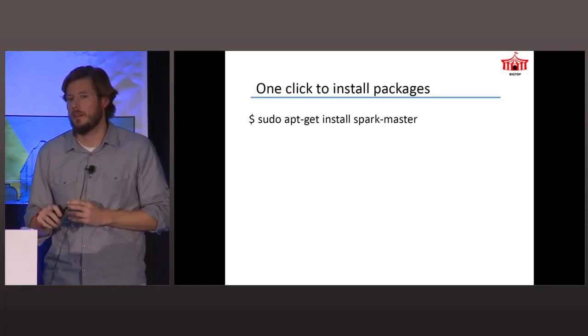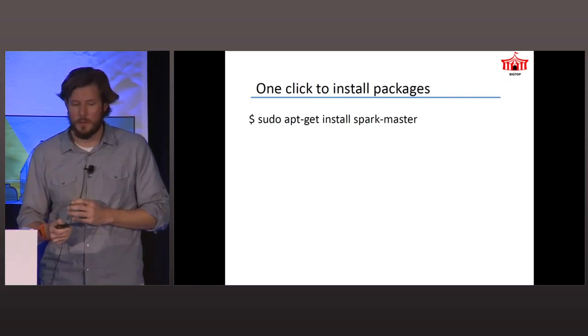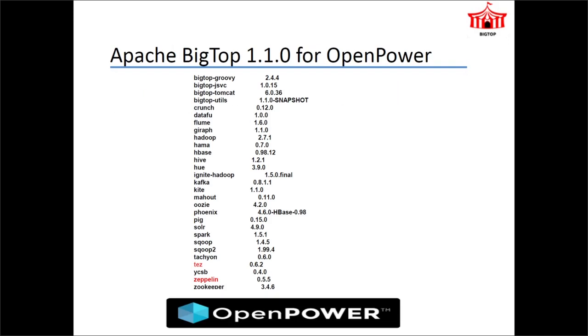Immediately afterwards, if you wanted to, you could install directly from the local host repository. As a community, we have infrastructure sponsored by Amazon, so you can basically build it yourself, or if you want to get going you can just install the packages. At the end of the day, everything is Debian and RPM packages for the platforms.